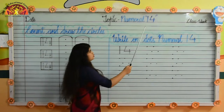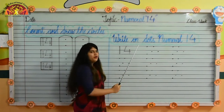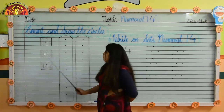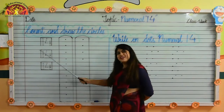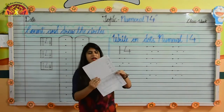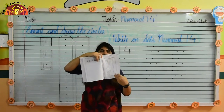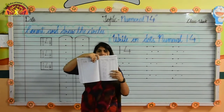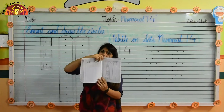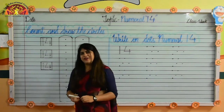Tell me kids, which numeral is this? 14. So kids, first we will do our tracing part. Take out your maths workbook, open page number 71, 72 and 73. Parents are requested to mention the date and classwork at the top. So kids, take a sharp crayon and do with me.